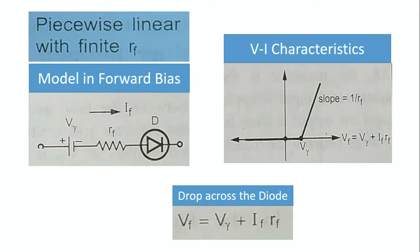The next model is the piecewise linear with finite resistance RF. Here we consider the diode forward resistance as well. After the cut-in voltage, the diode gets forward biased, and from the VI characteristics this slope is due to the diode forward resistance, where the slope is given as 1/RF. The drop across the diode is given as VF = V gamma + IF × RF.